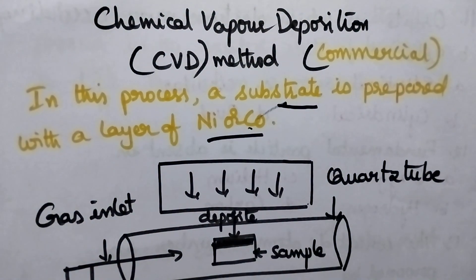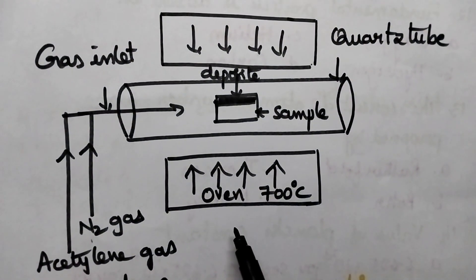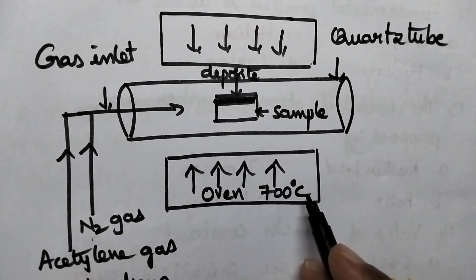Coming to the instrumentation of chemical vapor deposition method, it consists of an oven which is maintained at very high temperature, that is around 700 degrees Celsius.